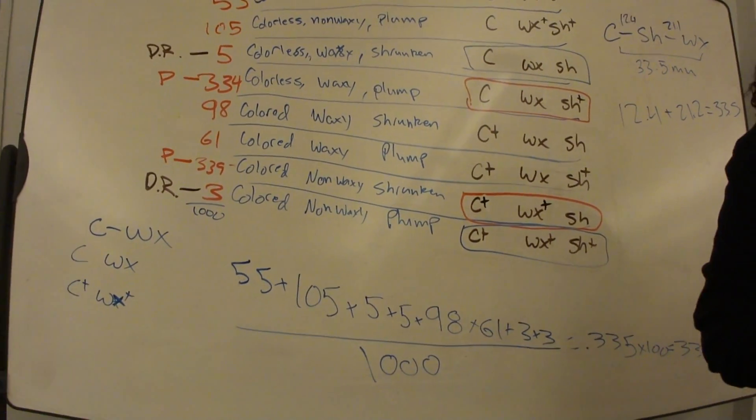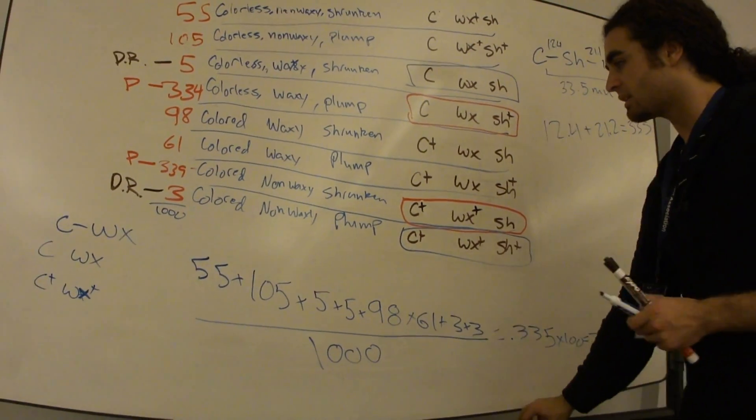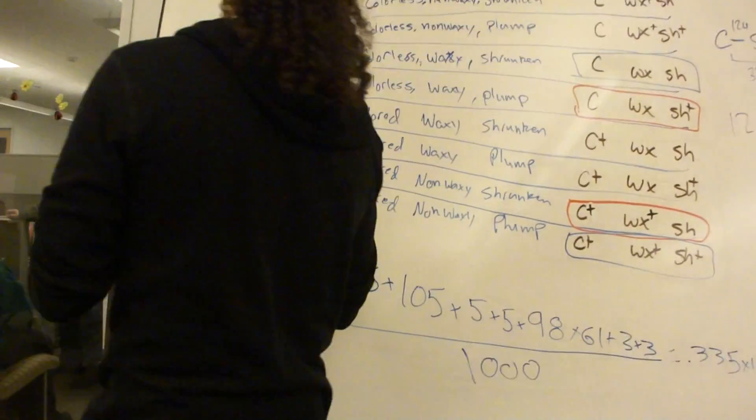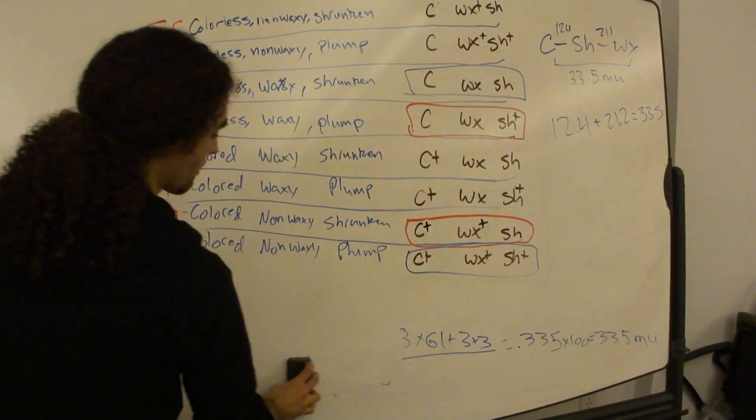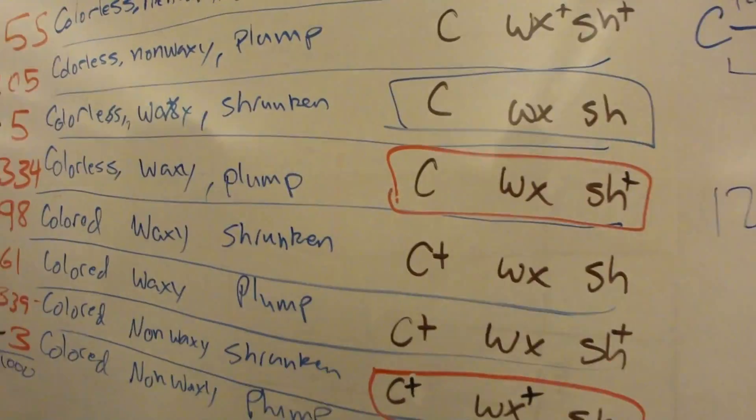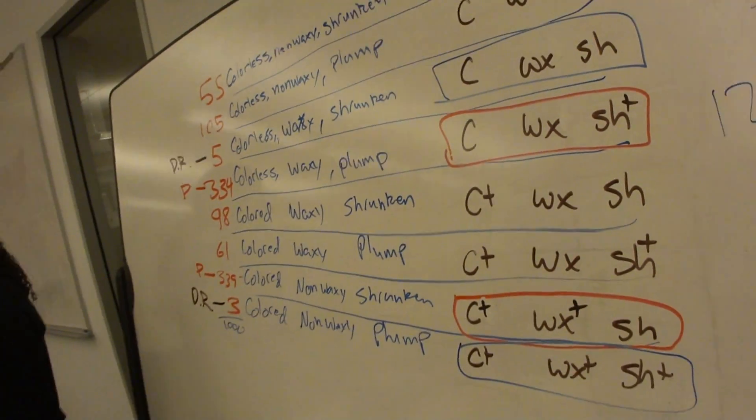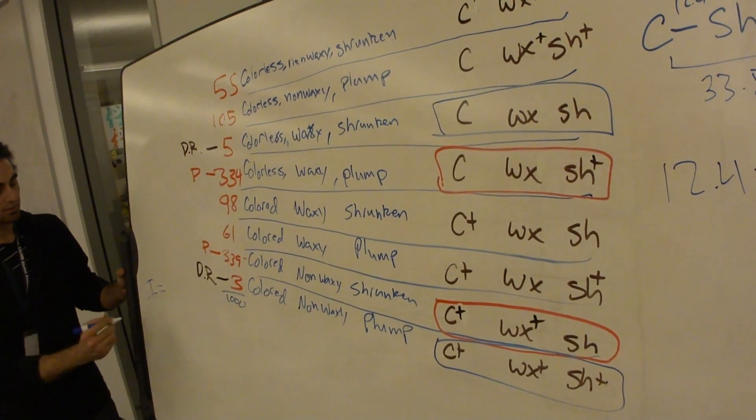And then, let's see. Yeah. Calculate interference. So, let's do that, too. Yeah. So, calculating interference, do you guys remember the equation for interference? One minus C.